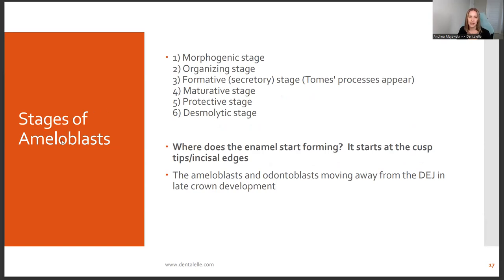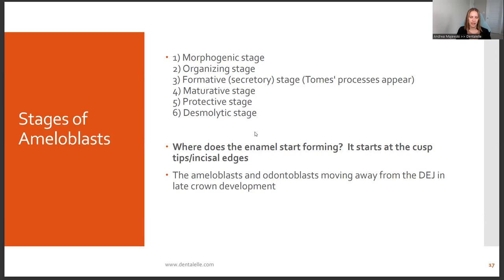The different stages of the ameloblasts relate to enamel formation. You have the morphogenic stage, the organizing stage, the formative or secondary stage, the mature stage, and the protective stage. Admittedly, they haven't asked about the different ameloblast stages on the board exam before, but it's good to know that enamel formation takes time and happens in multiple stages. Where does enamel start to form? It starts at the cusp tips and incisal edges. Remember: the crown forms first — not the root. The cells are moving away from the DEJ in late crown development.